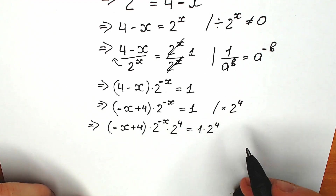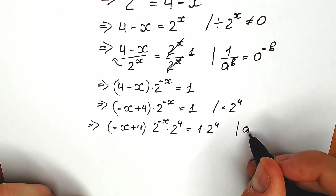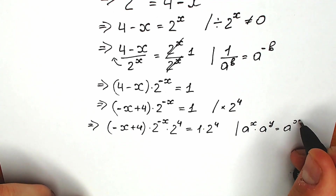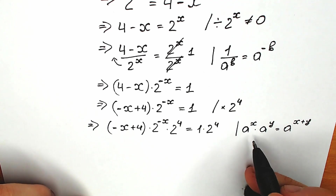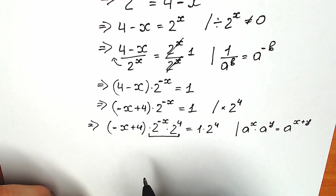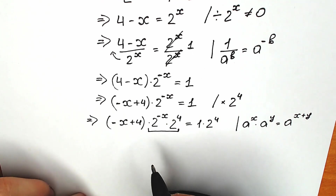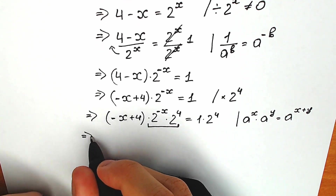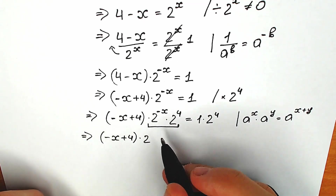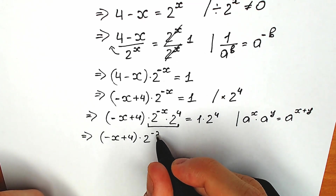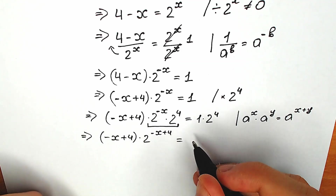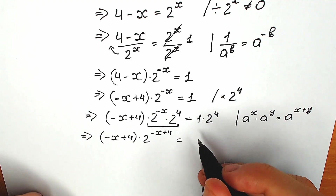This is a basic algebra property: when you have a to the power x times a to the power y, you can write it as a to the power x plus y. This works perfectly with multiplication and division. In our case we can write it as 2 to the power minus x plus 4. So we have minus x plus 4 times 2 to the power minus x plus 4, equal to 2 to the power 4, which equals 16.